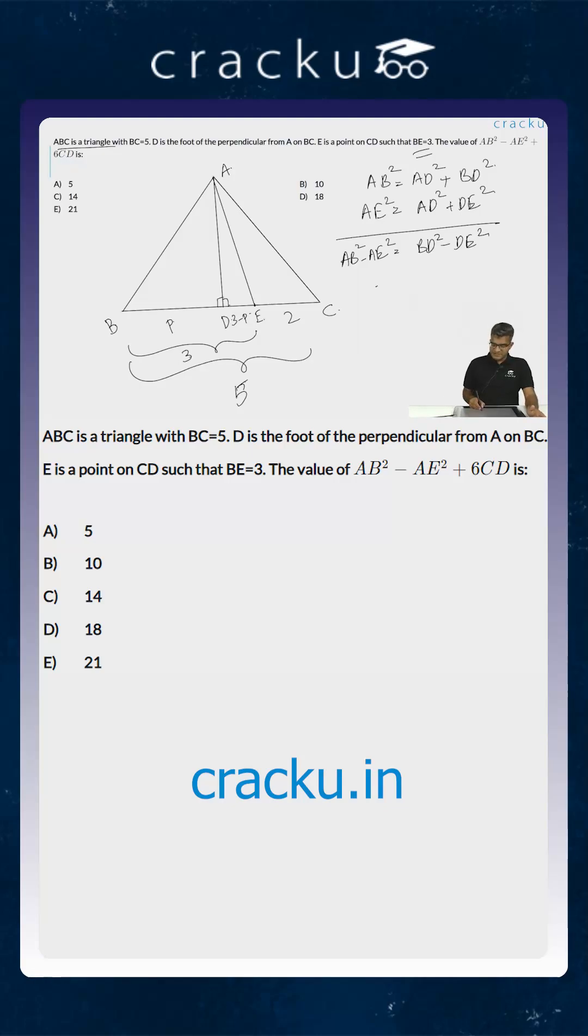What is BD square minus DE square? This is of the form X square minus Y square. So this is equal to BD plus DE into BD minus DE. But we know the value of BD plus DE. That is simply equal to BE which is equal to 3.